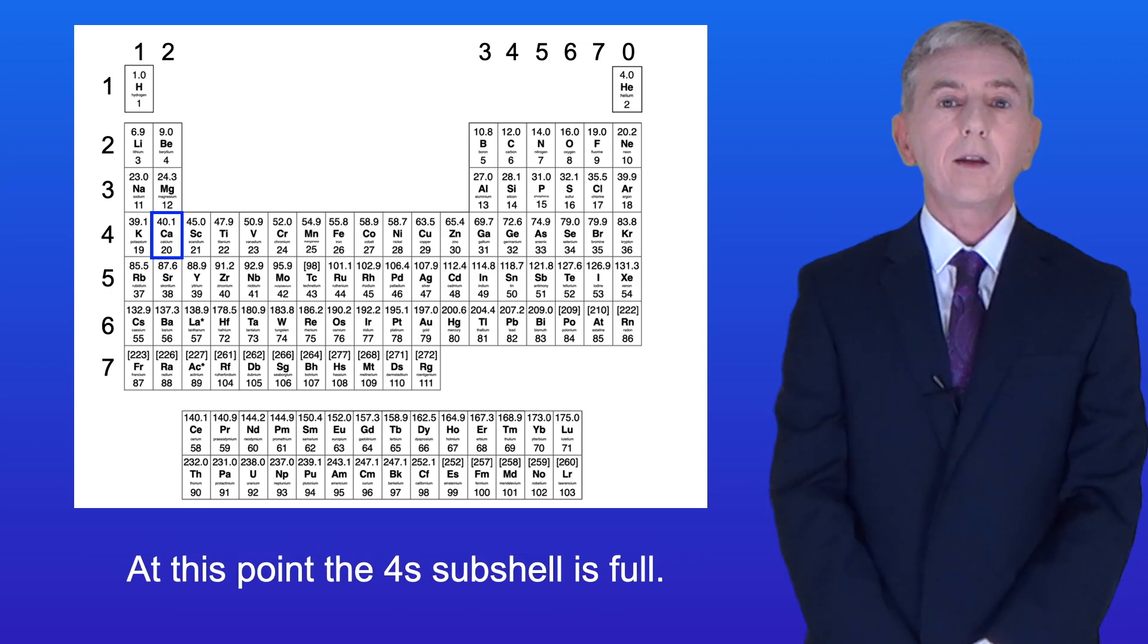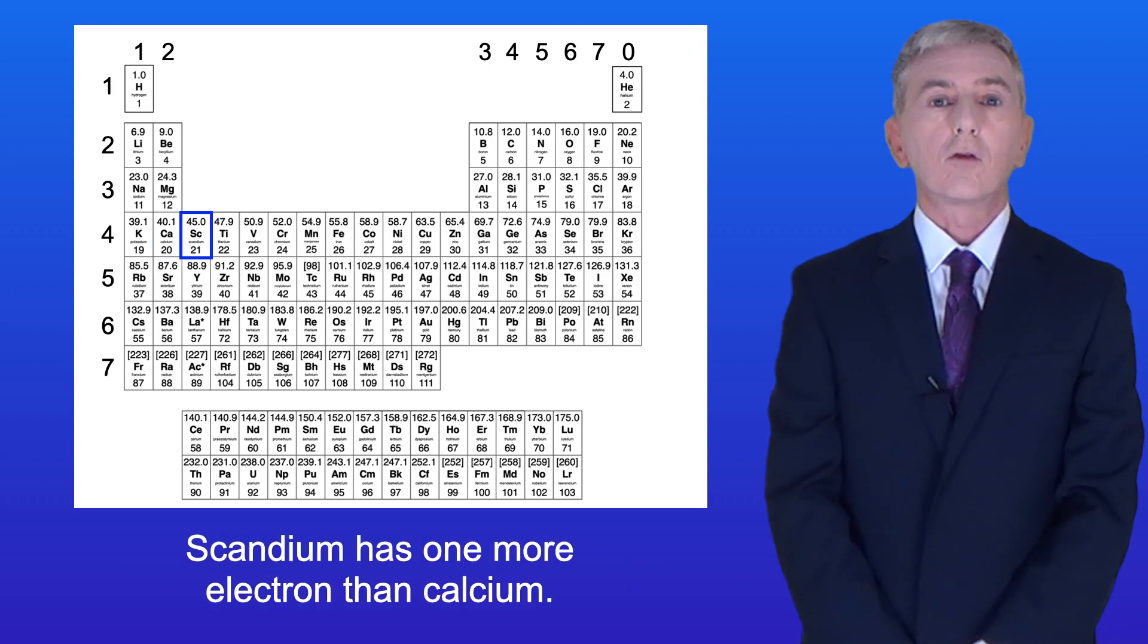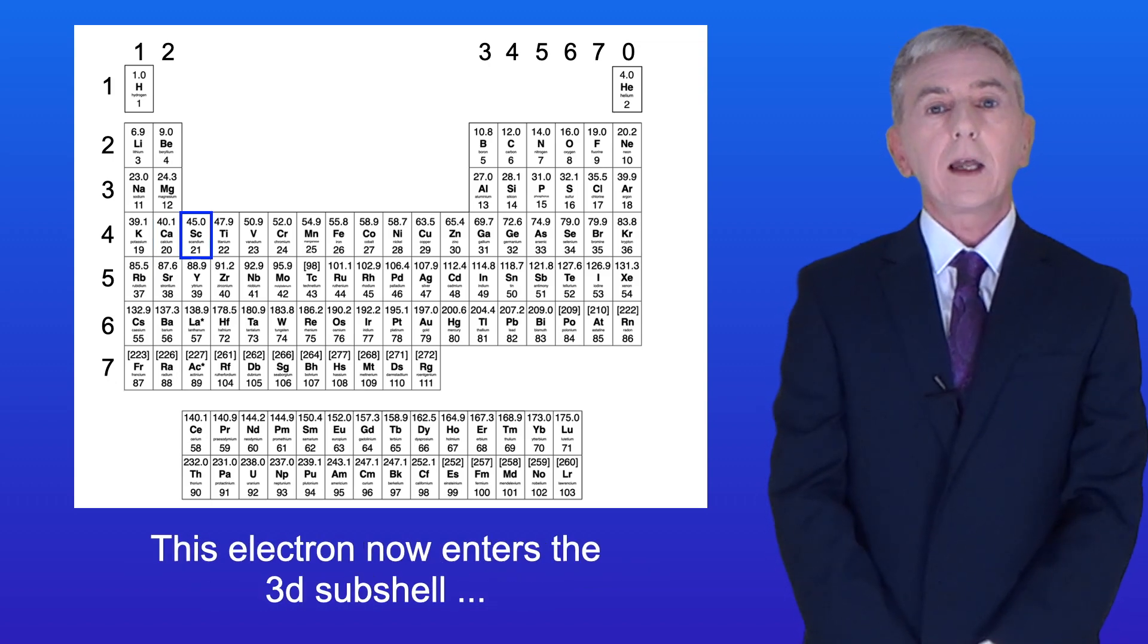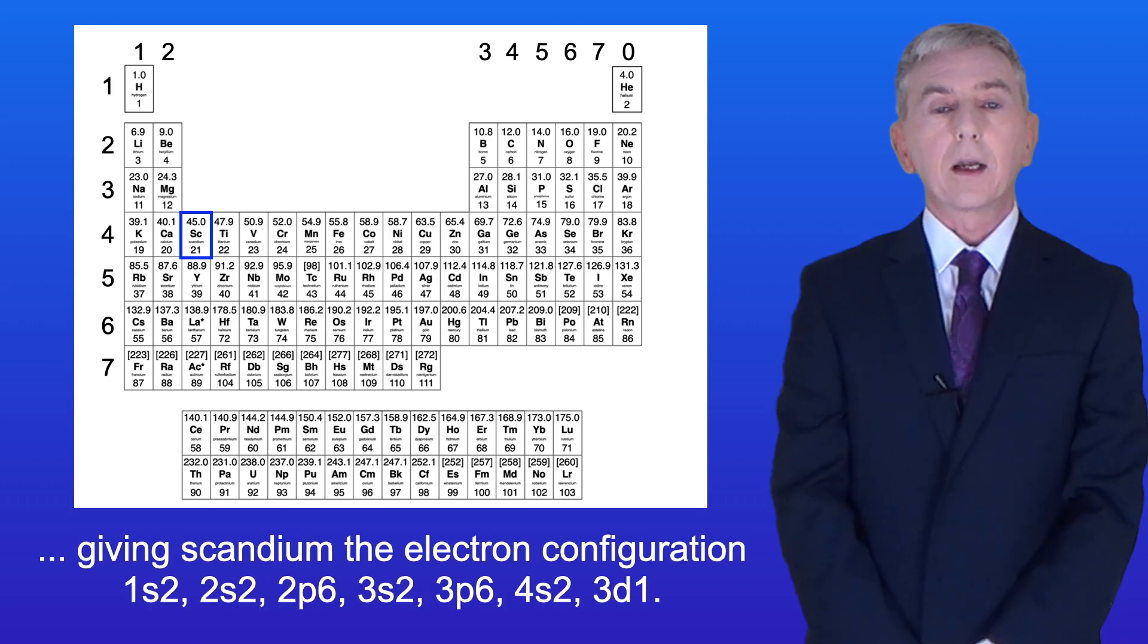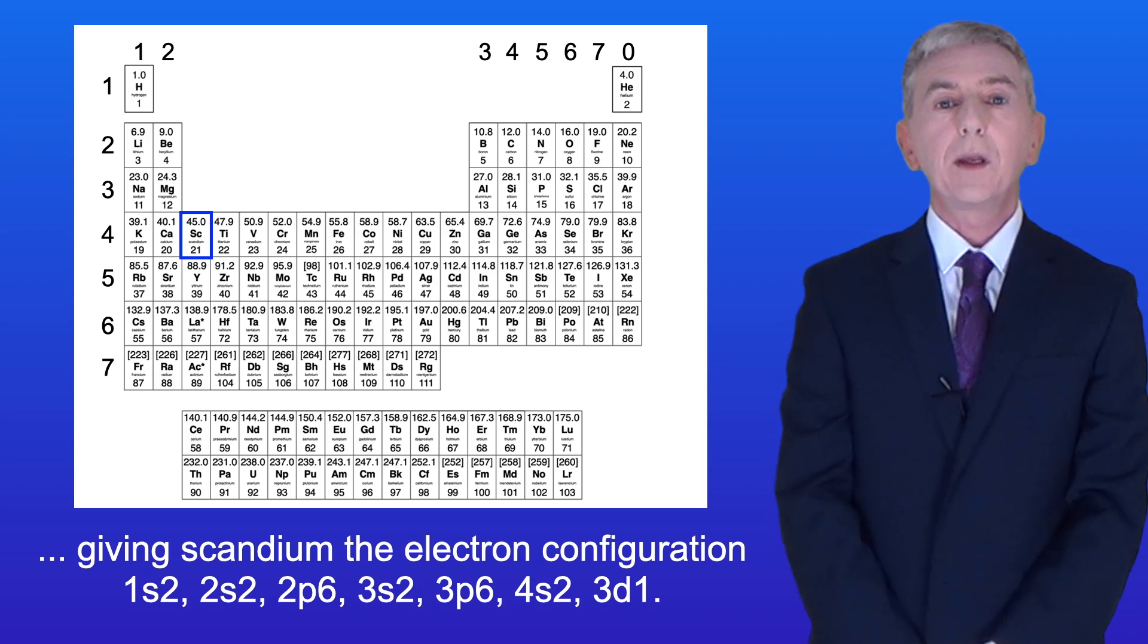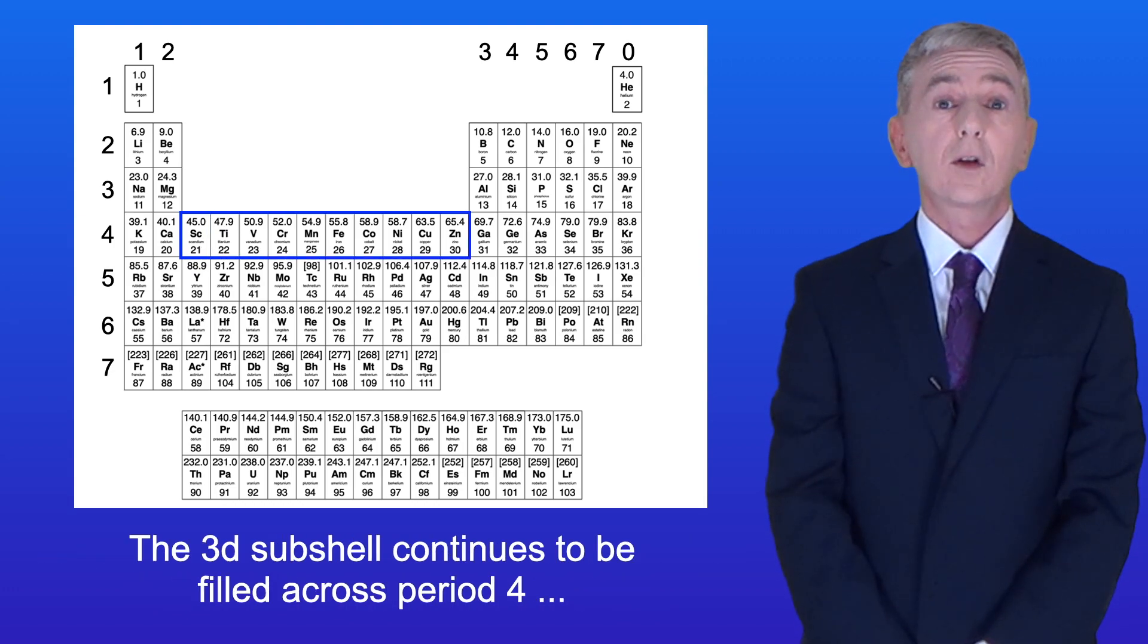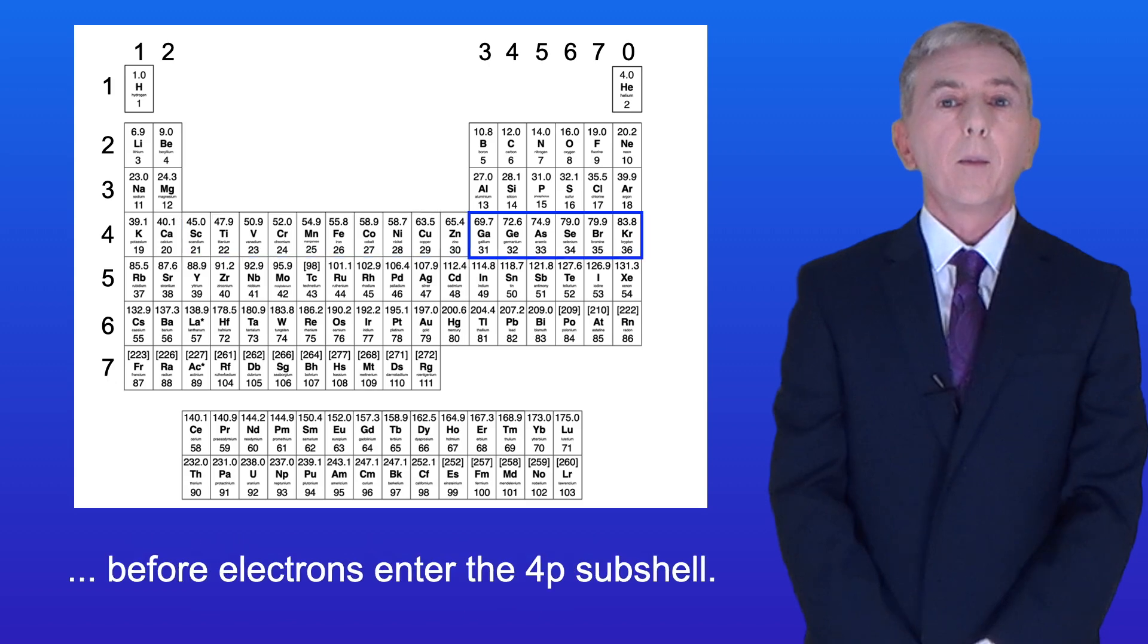Now at this point, the 4s-subshell is full. Scandium has one more electron than calcium. So this electron now enters the 3d-subshell, giving scandium the electron configuration 1s2 2s2 2p6 3s2 3p6 4s2 3d1. The 3d-subshell continues to be filled across period 4, before electrons enter the 4p-subshell.